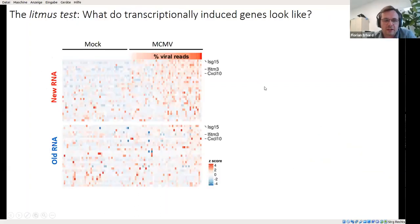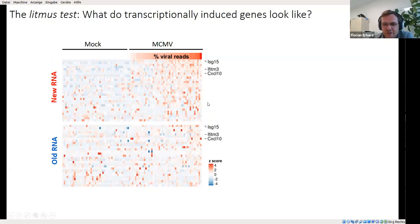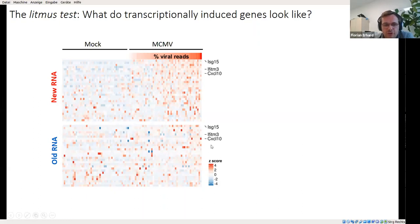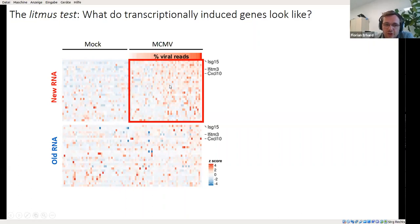The first analysis is what my former PhD advisor would have called the litmus test — something that has to work, otherwise we know we're in trouble. We look at interferon-stimulated genes (ISGs), known to be transcriptionally induced. These are shown in two heat maps, one for new RNA and one for old RNA. Because they are transcriptionally induced, we should see a strong difference between uninfected and infected cells, and we should see this only in new RNA — which is exactly what we see. We even see a dose-dependency effect: the more viral reads in a cell, the more regulation takes place.